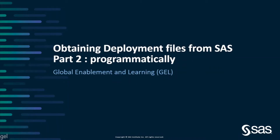In this video we want to look at how to obtain automatically the deployment file from SAS. It's a follow-up of the first part video where you were downloading the deployment assets using the public SAS portal and doing some manual steps. In this second part of the presentation we want to look at how to do that automatically.